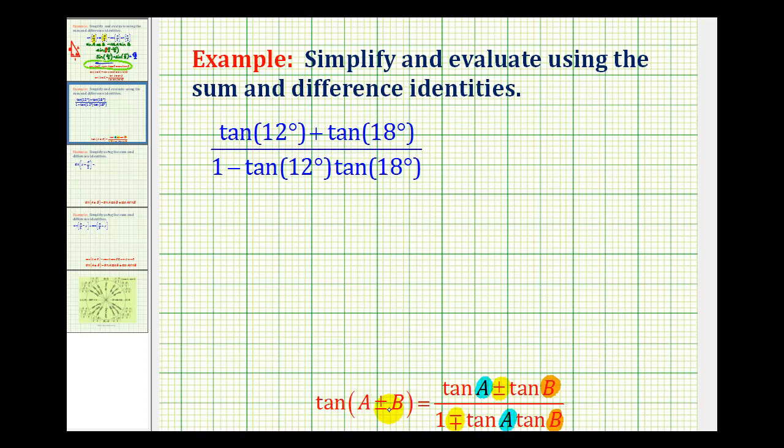Angle A is 12 degrees, angle B is 18 degrees, and we have a plus sign in the numerator and a subtraction sign in the denominator. If we use a plus sign, notice how we're using the top operation here and the top operation here. Therefore, we'll be using the top operation to combine angles A and B.